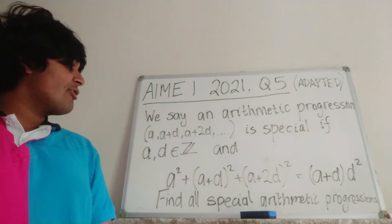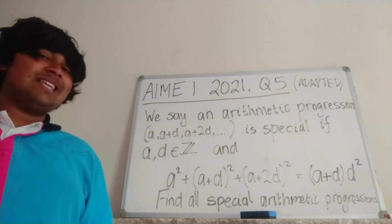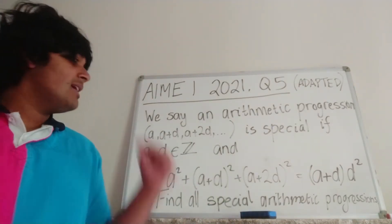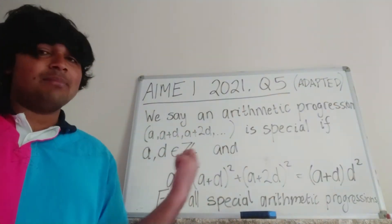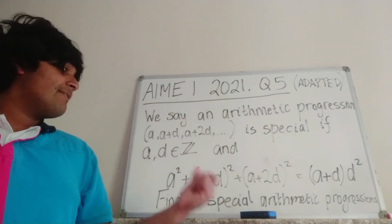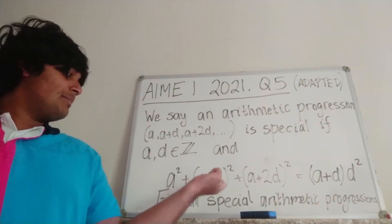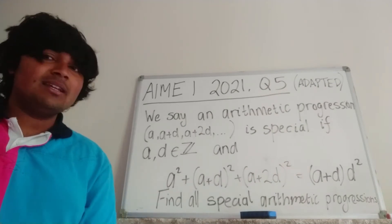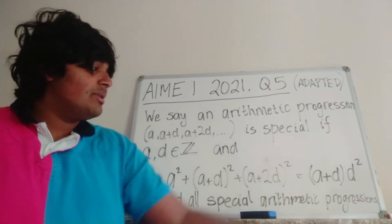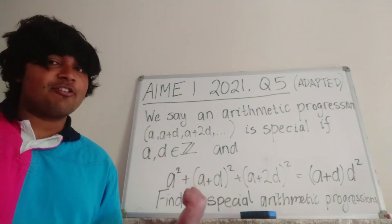We say that an arithmetic progression — a sequence of numbers where the first term is a, the second term is a plus d, the third term is a plus 2d, the fourth term is a plus 3d, then a plus 4d, and so on — is called special if a and d are both integers, and a squared plus (a+d) squared plus (a+2d) squared, in other words the sum of the squares of the first three terms, is equal to (a+d) times d squared. We want to find all special arithmetic progressions.